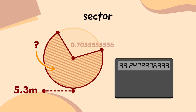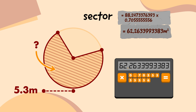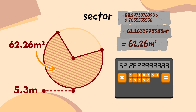Remember, this portion of the circle is 0.7055555556 times as big as the whole circle. So I'm going to multiply that by the area. I'll press the multiply button, type 0.7055555556, and press the equals button, which gives me 62.2633993383. That means the area of this sector of the third emblem circle is 62.26 square metres.